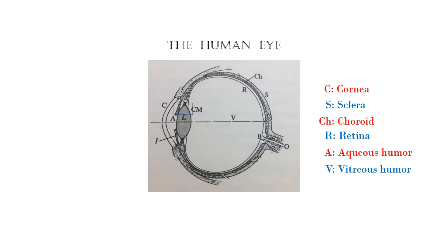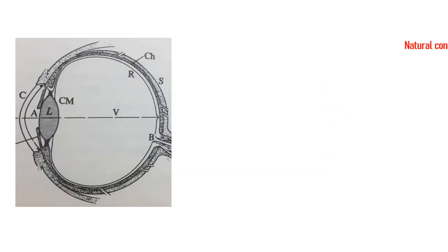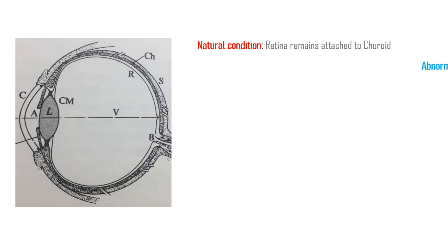the inside of the sclera is made up of a dark pigmented shell called choroid. The white of the eye seen from the front is also a part of sclera. Under natural conditions, the retina remains attached to the choroid and covers it like a membrane. But sometimes, it may get detached from the choroid because of disease,